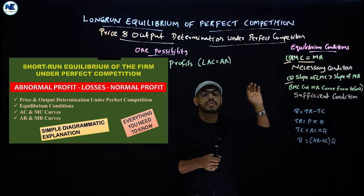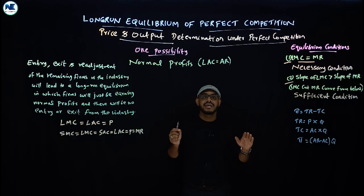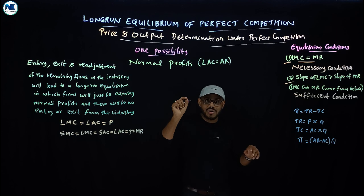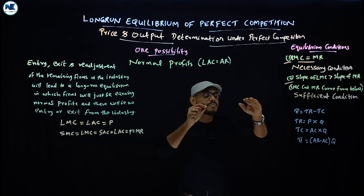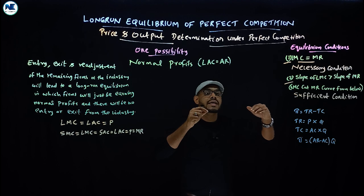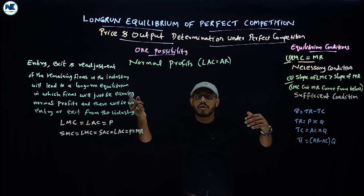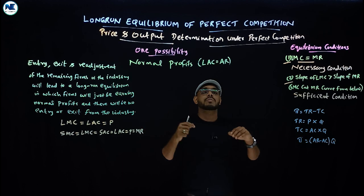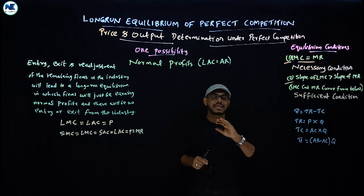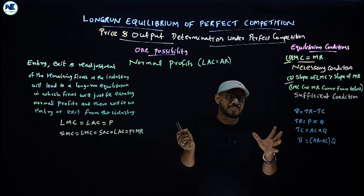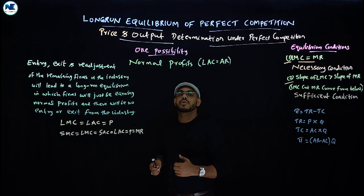We have already discussed the short-run equilibrium of perfect competition, as well as monopoly and monopolistic competition — you can watch all those videos. In the short period, a perfectly competitive firm can earn super-normal profit, losses, or normal profit — three possibilities that we have discussed with diagrams.